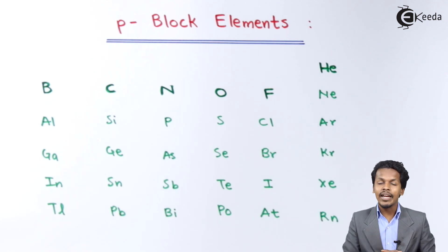If we talk about the general electronic configuration, it has been found for P-Block it is basically NS2 and P from 1 to 6. So that was related to the general electronic configuration.